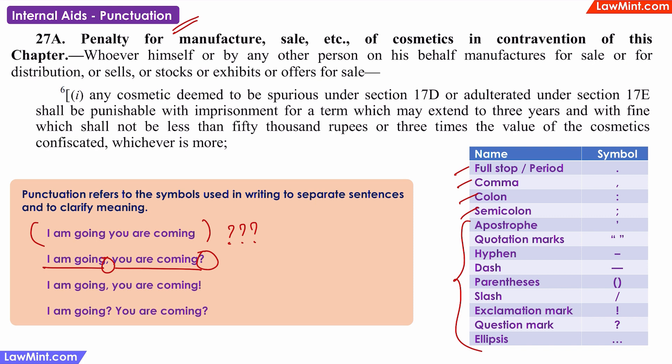In the third sentence, the author is stating that he is going and that the second person is also coming with him. He is not asking — it is not a request, it is a statement or a command. This is indicated by the exclamation mark. In the fourth sentence, the author is not sure about anything. He is asking whether he is going and whether the second person is coming, indicated by the question marks after each of these sentences. So you can see that the meaning of the words changes due to the usage of punctuation marks.